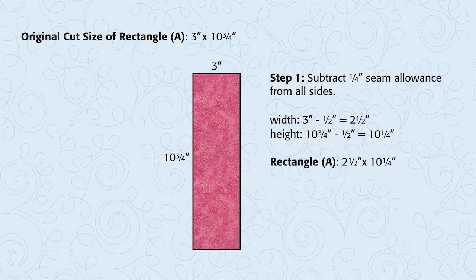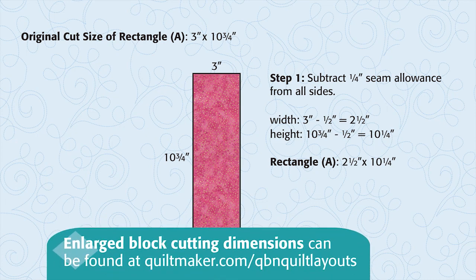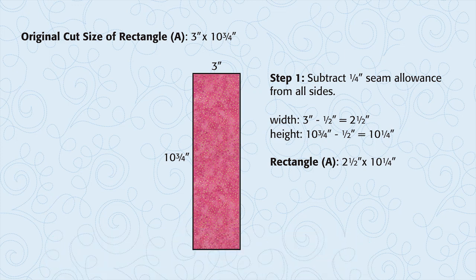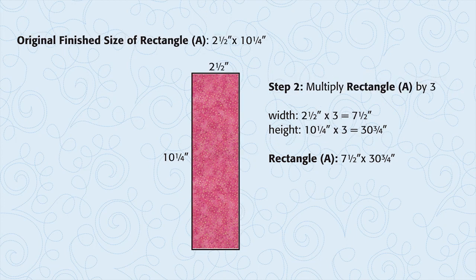There is a basic formula for making blocks bigger. Let's take a look at the cutting dimensions. Patch A is cut three inches by ten and three quarters inches. Our seam allowance is a quarter inch all the way around. So when figuring the finished size, subtract a half inch from both the width and the height. This makes the finished size of A two and a half by ten and a quarter. We want to make the block three times bigger, so we will multiply the finished size by three. Two and a half inches times three equals seven and a half inches. Ten and a quarter times three equals thirty and three quarters inches. That will be the finished size for the new larger A.